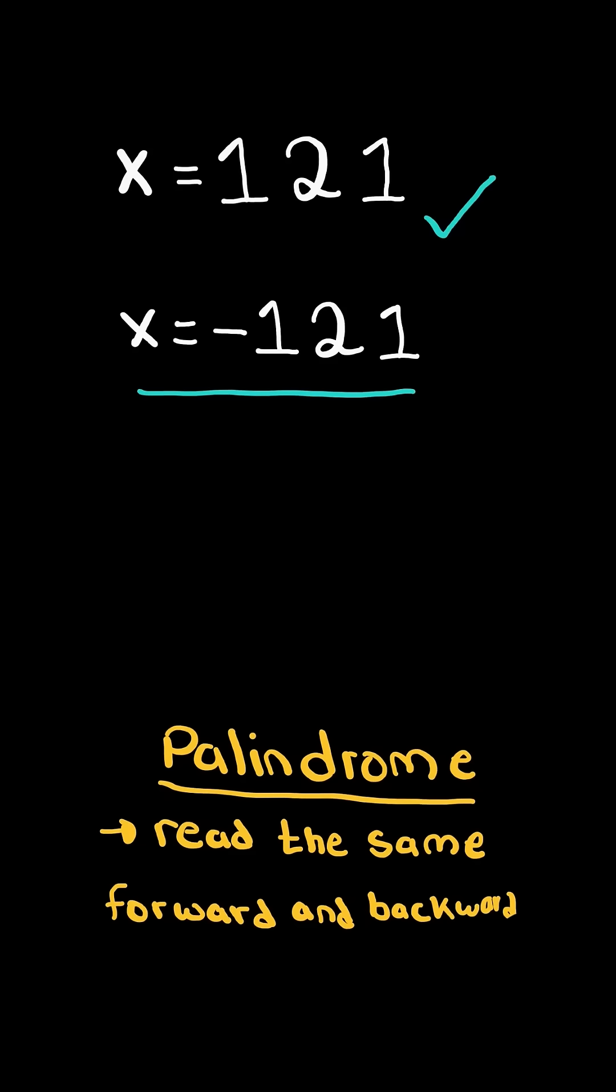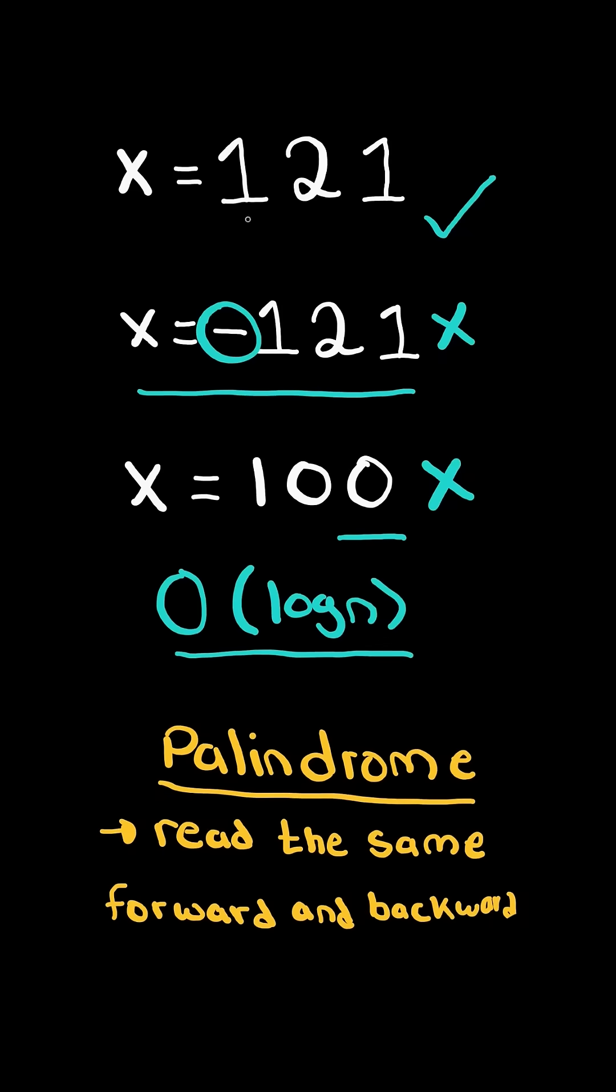Negative numbers cannot be palindrome due to the negative sign, and numbers ending in zero cannot be palindrome. We will solve this in log n time, which is equal to the number of digits.